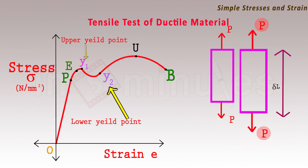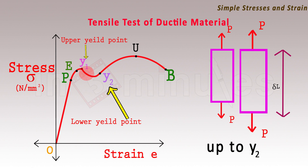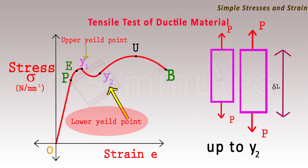Even if the load is removed beyond point E, the material will not go back to its original size and shape — there will be a permanent set of deformation induced in the specimen. This plastic region is also called as the yielding region. Yielding has the characteristic that there is a considerable increase in strain with negligible increase in stress, and the curve follows an S path. The point of maximum stress in this yielding region is called as the upper yield point, and the point of lowest stress is called as the lower yield point.